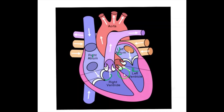The septum prevents the mixing of oxygenated and deoxygenated blood. The two auricles — the right auricle (right atrium) and the left auricle (left atrium) — are separated from each other by the interatrial septum.